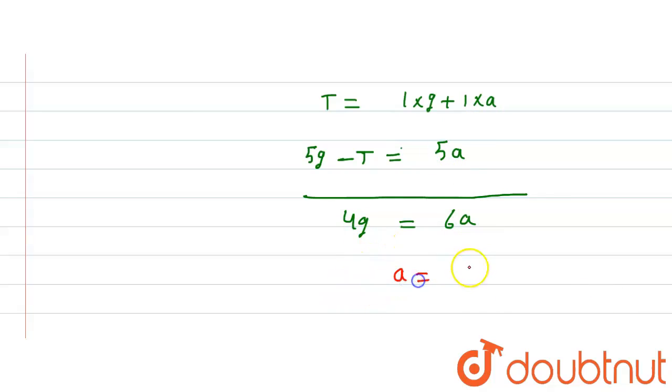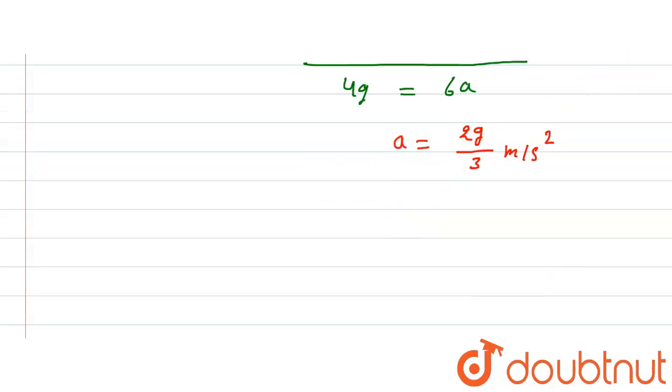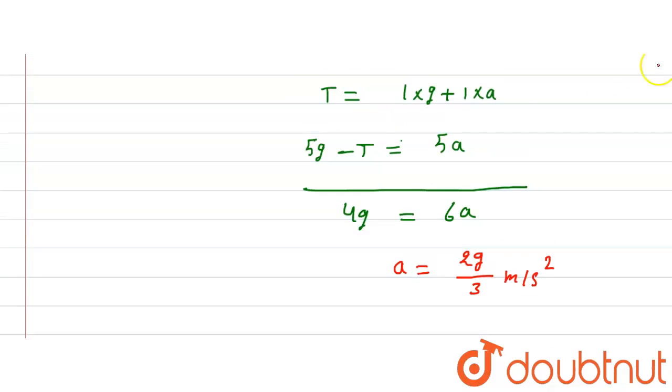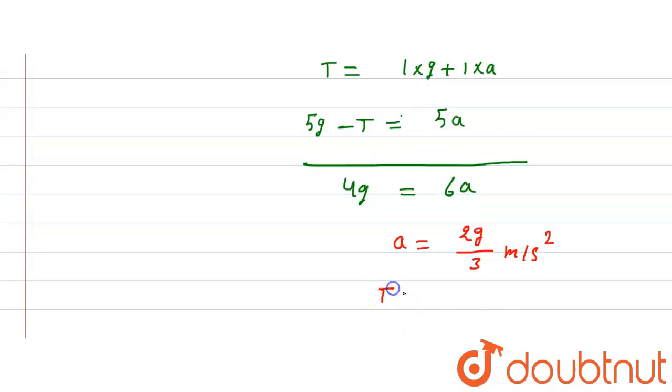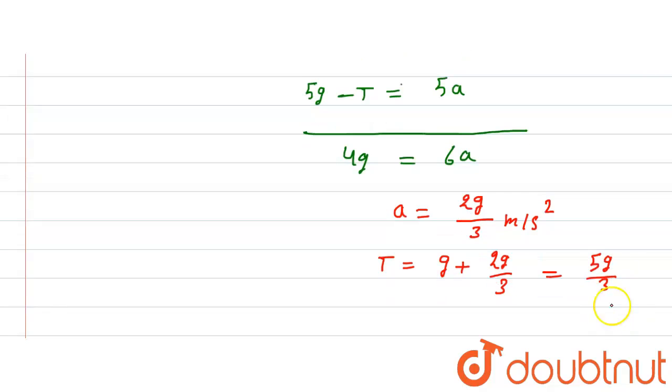Acceleration will come out to be 2g by 3 meters per second squared. Now put this acceleration in the tension equation. T equals g plus 2g by 3, which is 5g by 3. So tension equals 5g by 3.